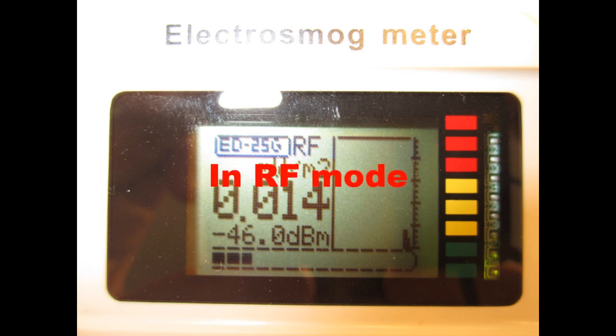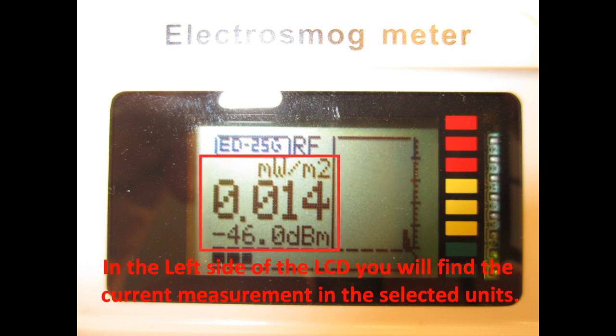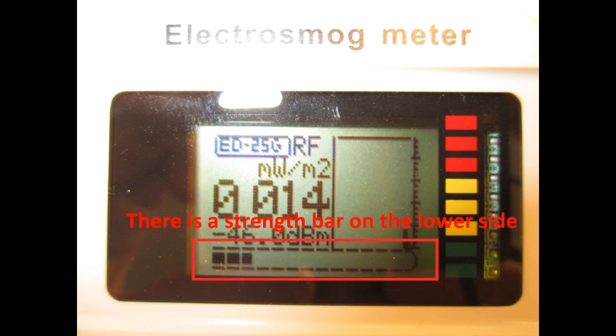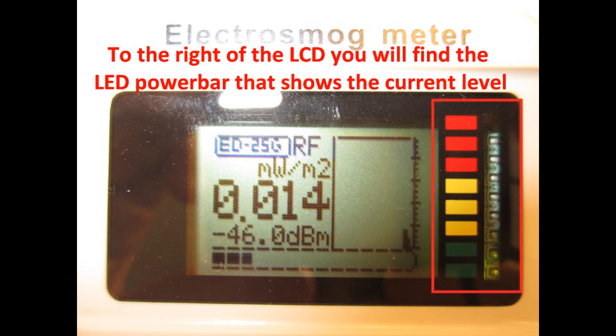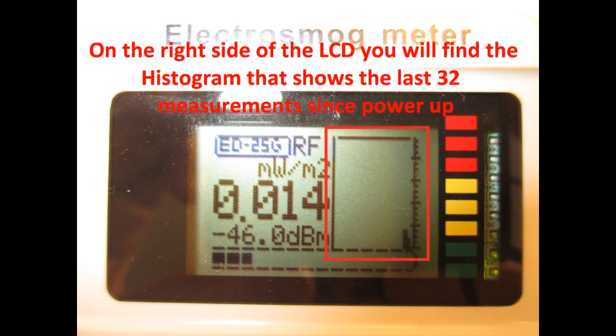The following displays appear in RF mode. In the left side of the LCD you will find the current measurement in the selected units. There is a strength bar on the lower side. To the right side of the LCD you will find the LED power bar that shows the current level. On the right side of the LCD you will find the histogram that shows the last 32 measurements since power-up.